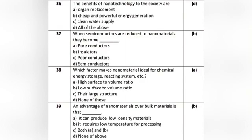Question 12: The benefits of nanotechnology to society are — Option A: organ replacement. Option B: cheap and powerful energy regeneration. Option C: clean water supply. Option D: all of the above. The correct answer is Option D: all of the above.